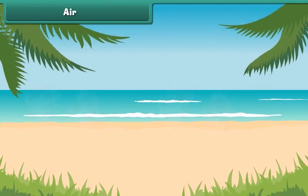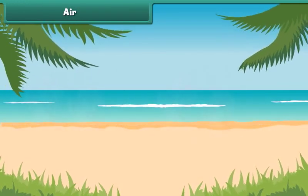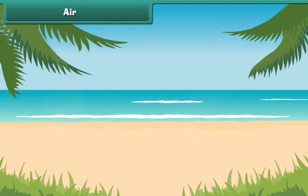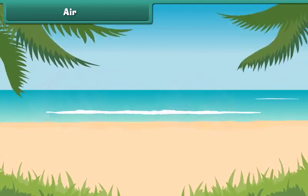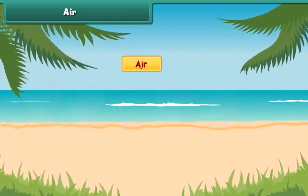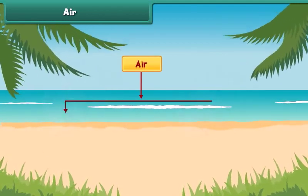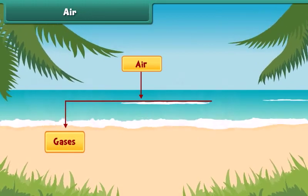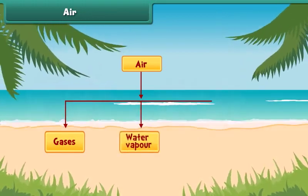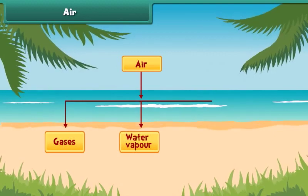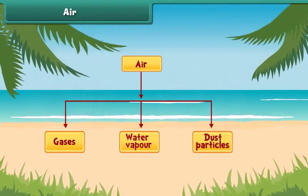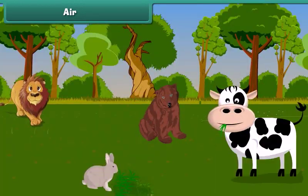First, let's talk about air. Air, as we know, is present around us everywhere. It contains gases, water particles, which are also called water vapors, and dust particles. Animals and plants breathe air to live.